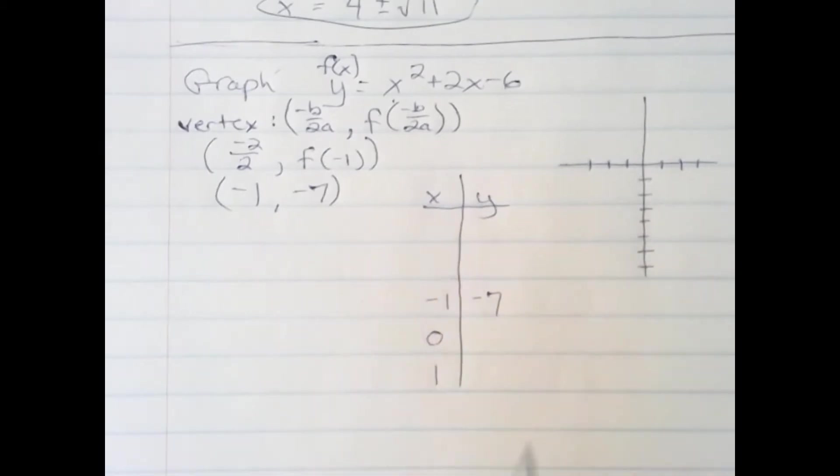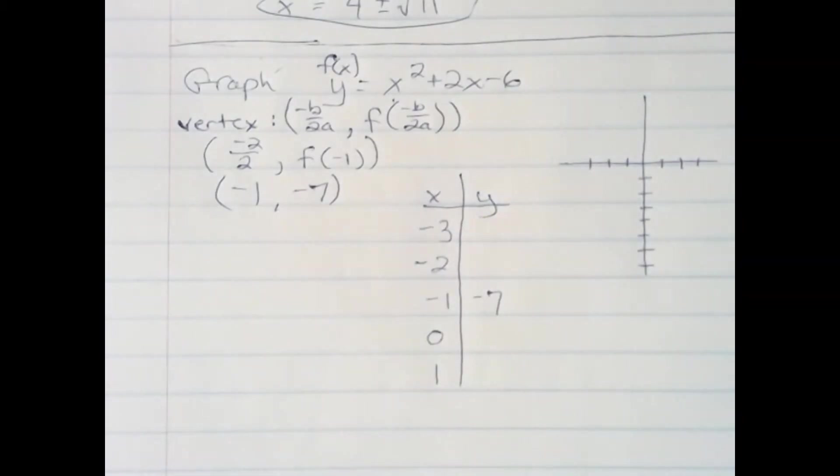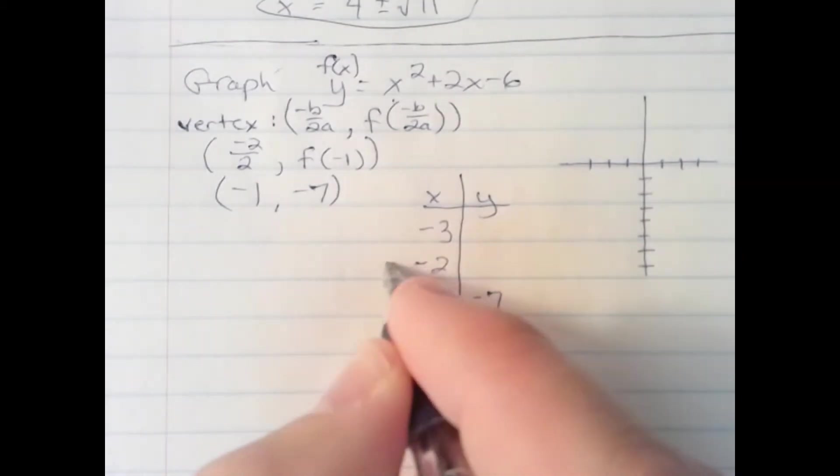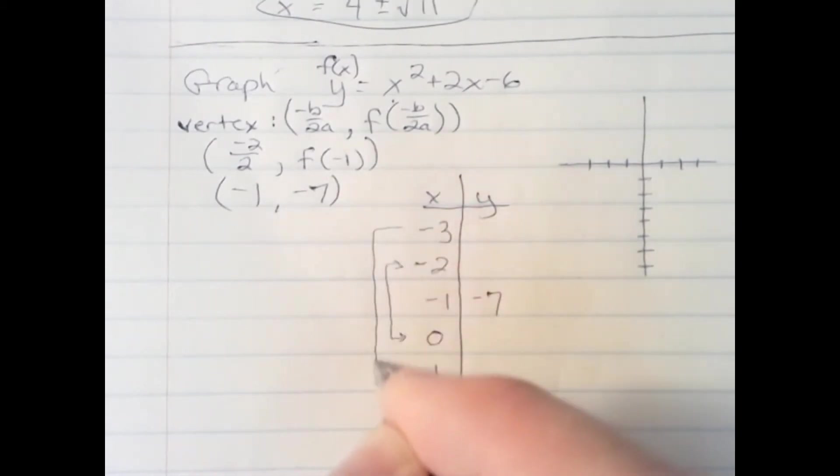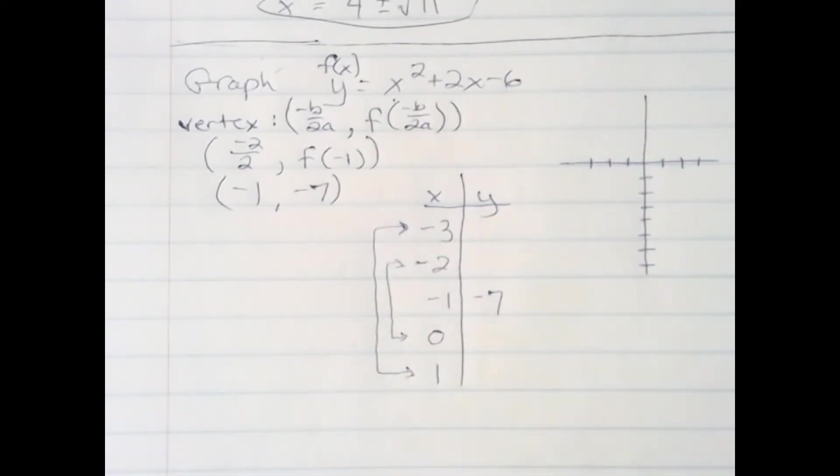0 and 1 are two values to the right of it on the x-axis. Negative 2 and negative 3 are two values to the left of that. Now, the interesting thing about this is that I know these y-values here and here, and here and here, will be the same because of the symmetry of the graph. So I only need to calculate these two y-values to complete my table and have five solid points from which to graph.